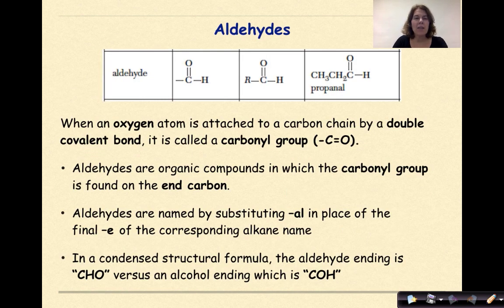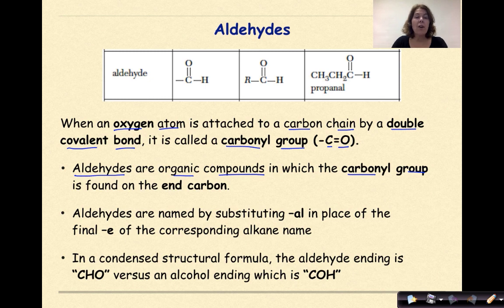Now let's talk about aldehydes. When an oxygen atom is attached to a carbon chain by a double covalent bond, it is called a carbonyl group, represented as C double-bonded O. Aldehydes are organic compounds in which the carbonyl group is always found on an end carbon. Aldehydes are named by substituting -AL in place of the final E of the corresponding alkane name. In a condensed structural formula, the aldehyde ending is CHO, versus an alcohol ending which is COH.